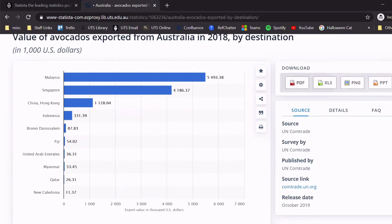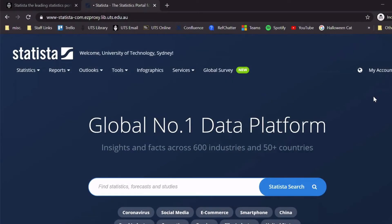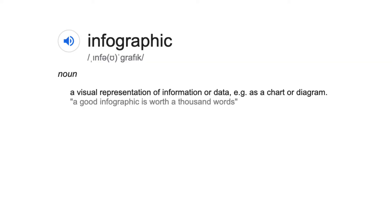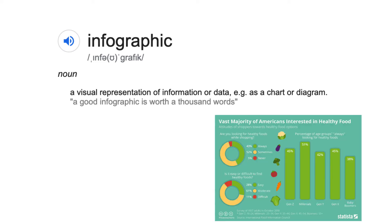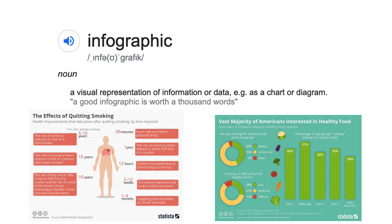Below the chart, you'll see the source and details. Another thing Statista is good for is finding infographics. Infographics are a visual representation of data, information, or knowledge — usually more colorful and more visual than simple statistics.